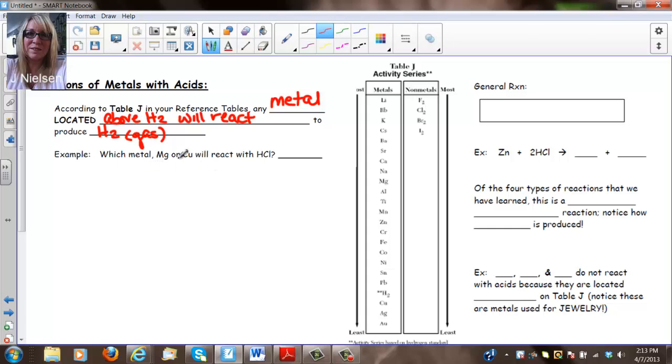Any metal located above H2 will react with H2 to produce H2 gas in reaction. So when you look at Table J, it says which metal, Mg, Cu or Cu will react with HCl. Well HCl contains H, so the H2 here is what they're talking about. This is representing the acid. So the metal has to be above it, so let's look at where Mg is. Mg is up here and Cu is below it. So Cu will not react, the Mg will react with the HCl.